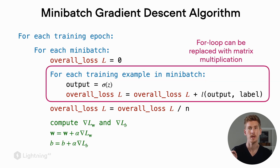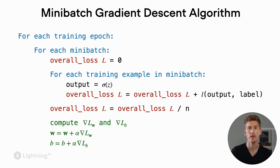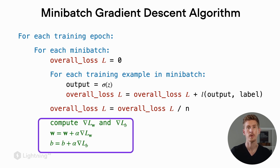In gradient descent we did the same computation over the whole epoch; here the only difference is that we consider only those training examples that are in the mini batch. Once we compute the overall loss for the mini batch, we compute the gradient of the loss and use it to update the model parameters. Notably, the gradients from mini batches are unbiased estimates of the full-dataset gradients, because they don't systematically deviate from the full calculation.